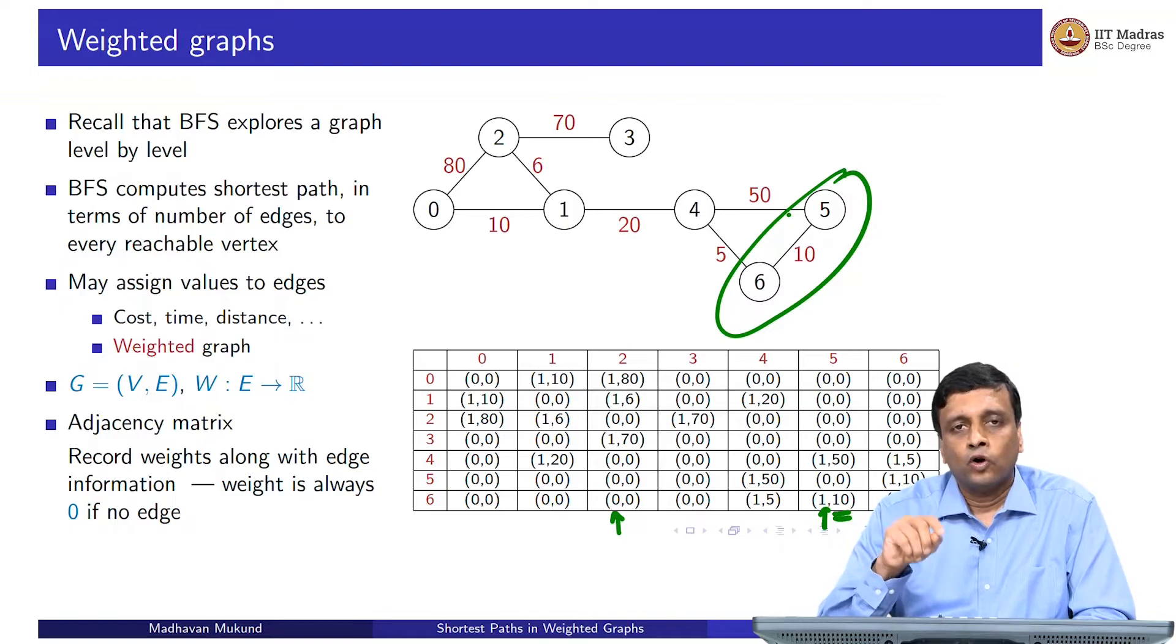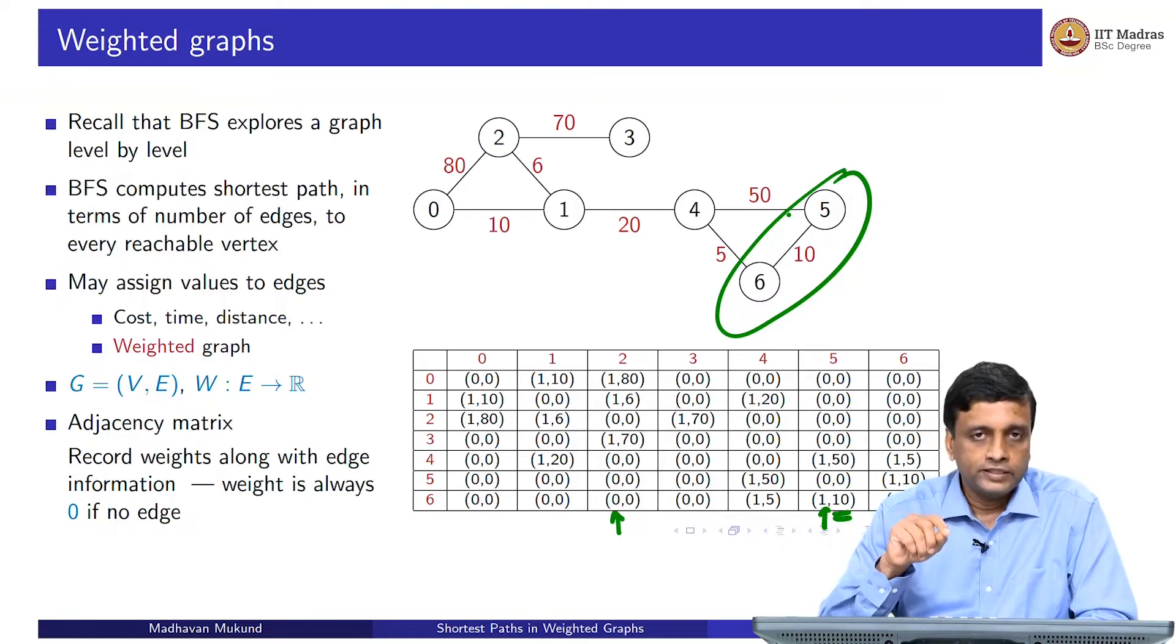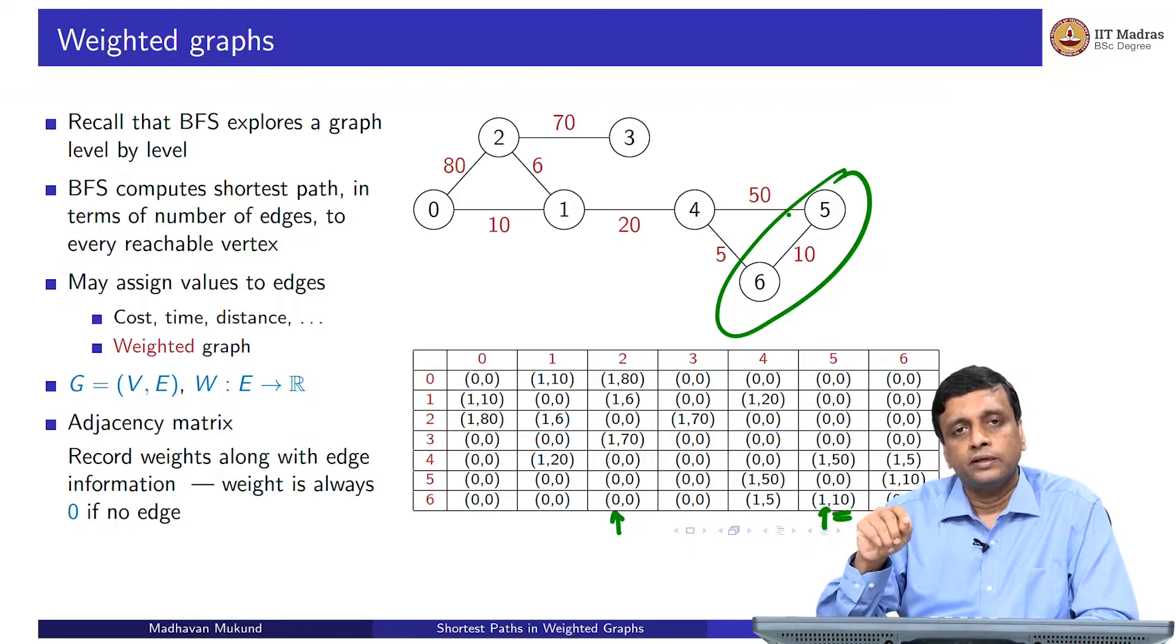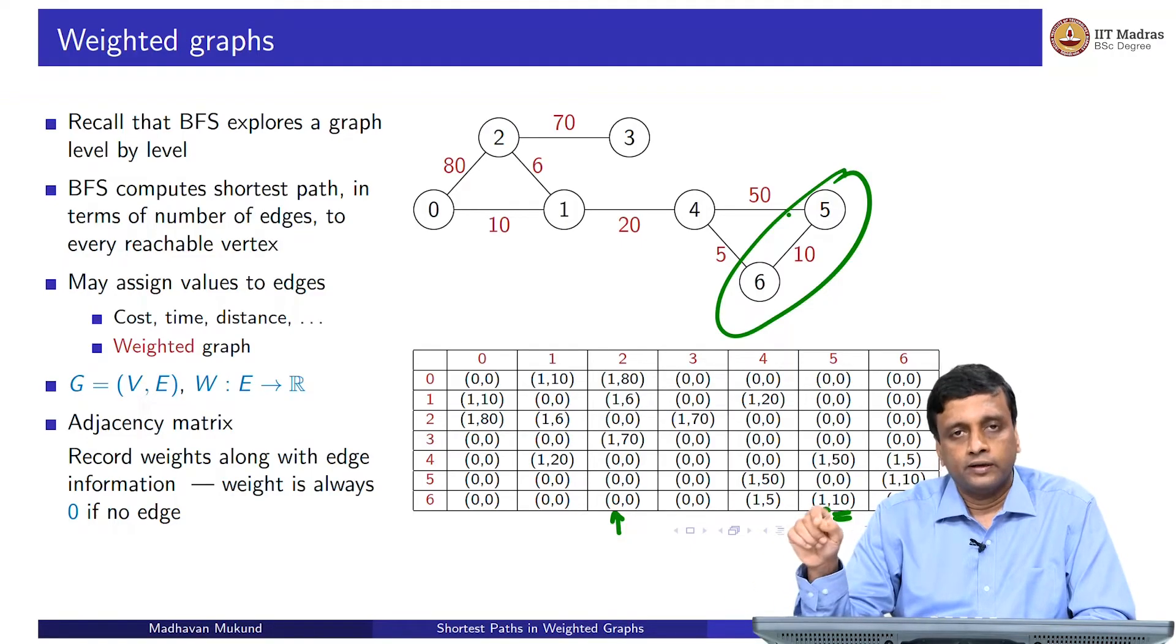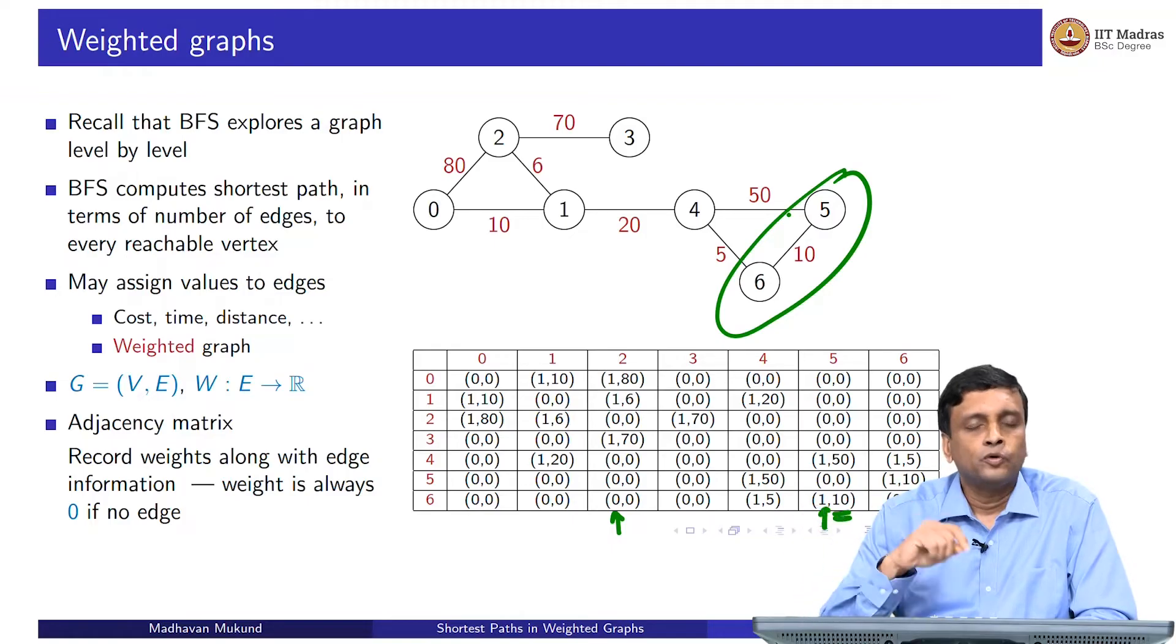In each cell of the matrix, I have a pair of numbers, or you can think of it as a three dimensional matrix. Each i,j has coordinate 0, which is the edge information, and coordinate 1, which is the weight information. We know that if there is no edge, there is no weight. If there is no edge, the weight must be 0. If there is an edge, the weight may still be 0. Just looking at the weight, I cannot tell if it is 0 or not, so I need to know both the edge and the weight.